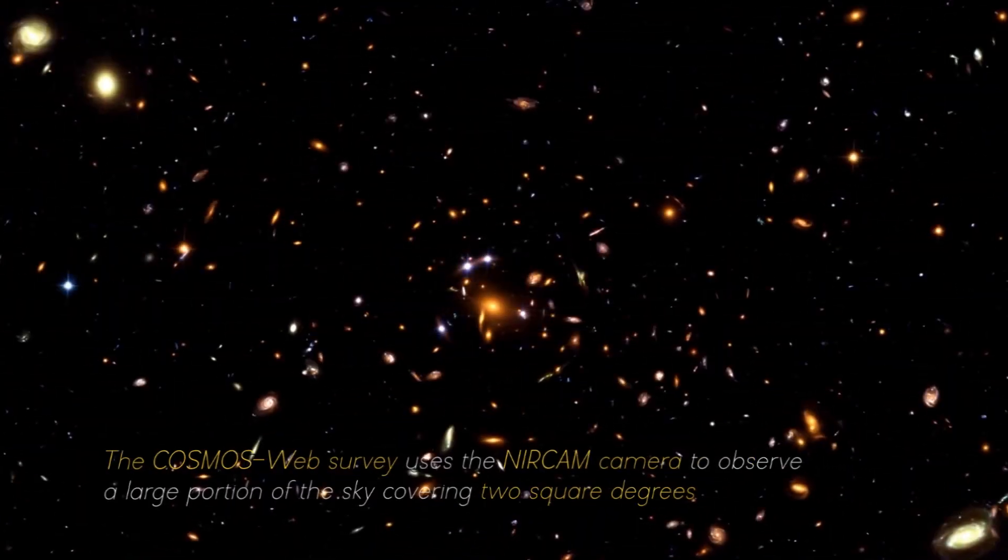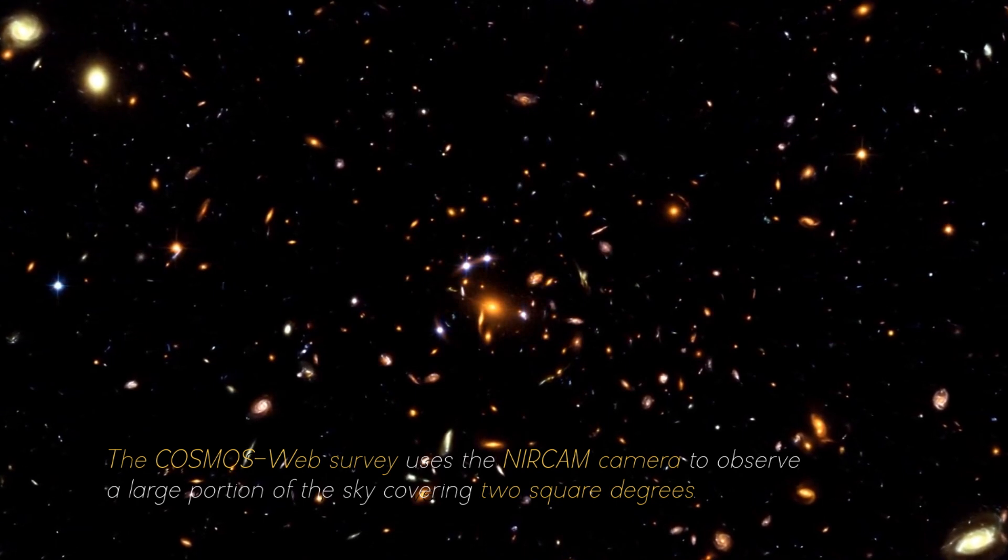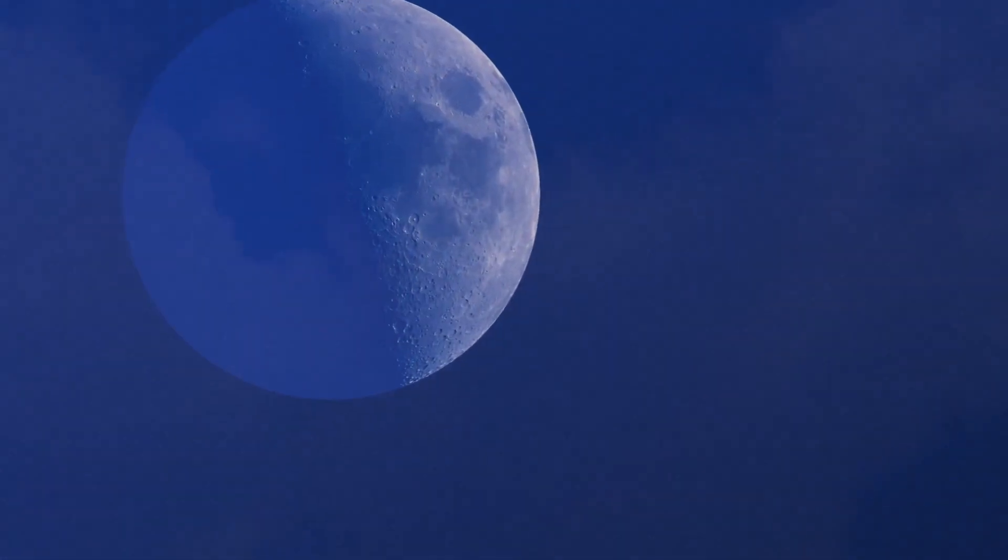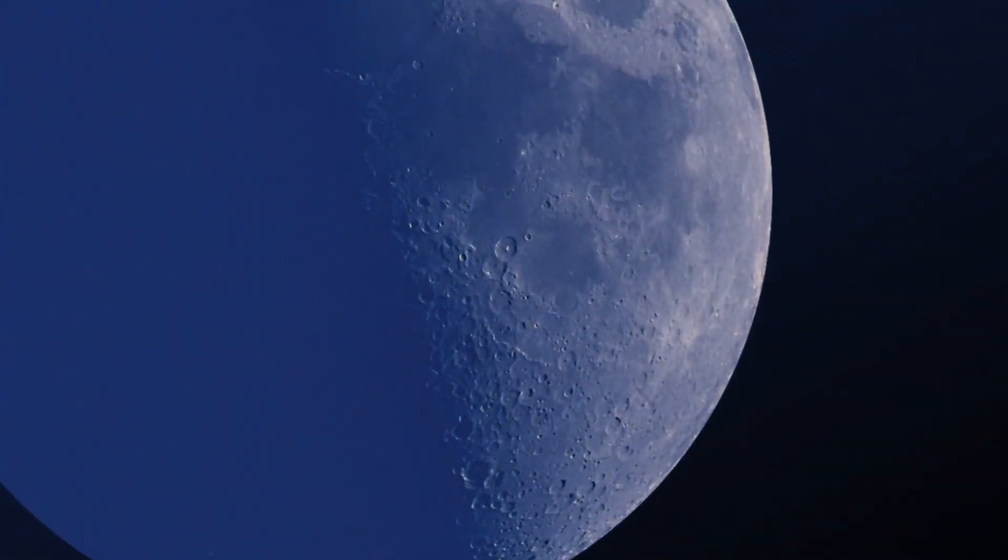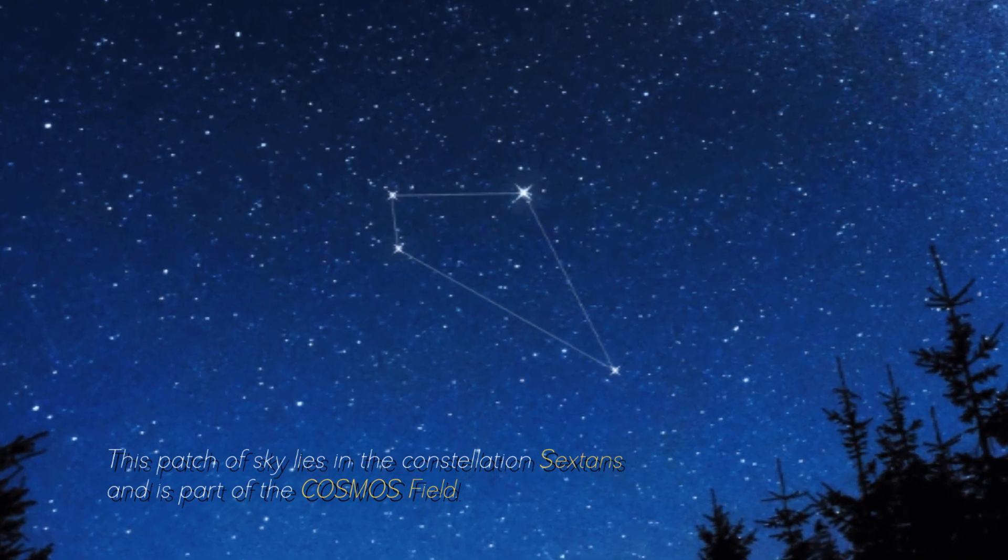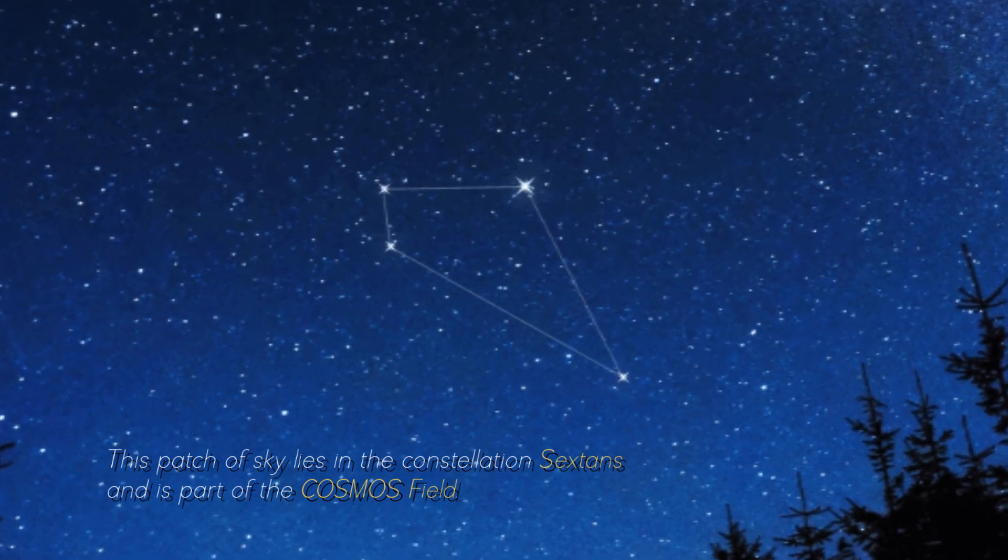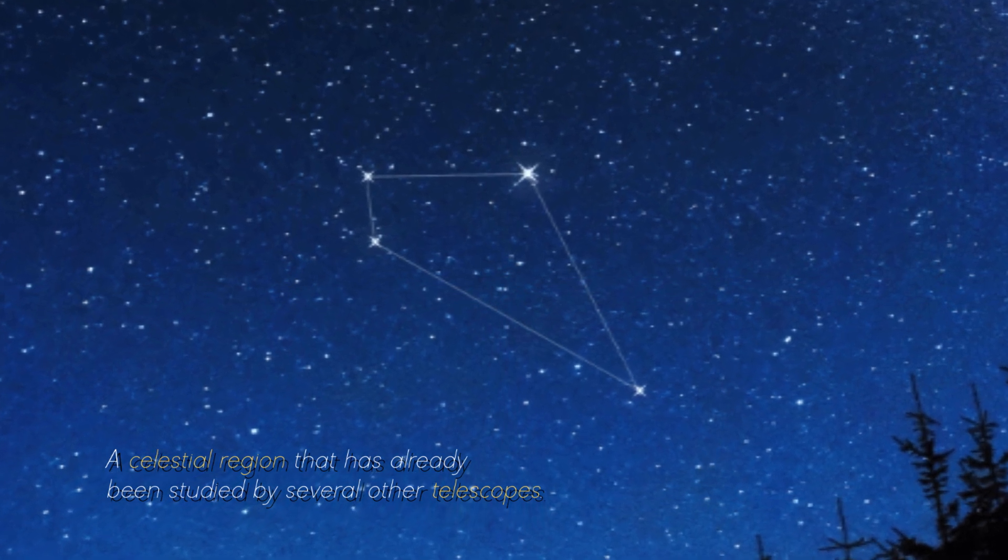The Cosmos Web Survey uses the NIRCam camera to observe a large portion of the sky covering two square degrees. To put it in perspective, this area is equivalent to about ten times the surface area of the full moon. This patch of sky lies in the constellation Sextans and is part of the Cosmos Field.